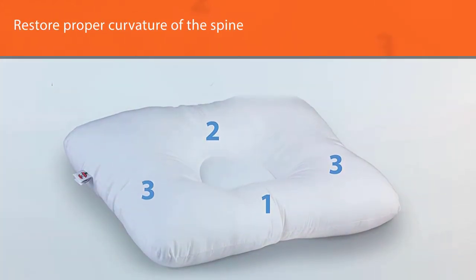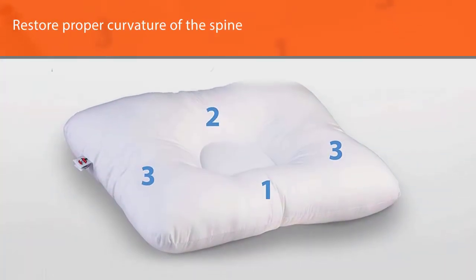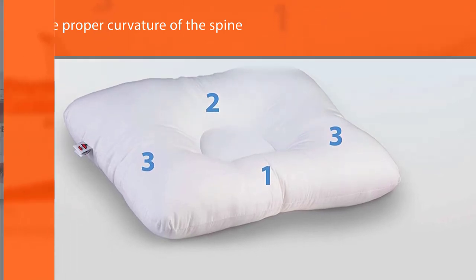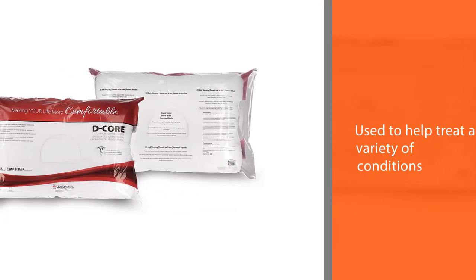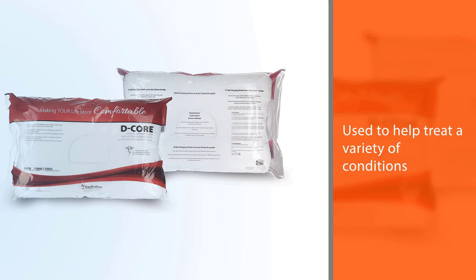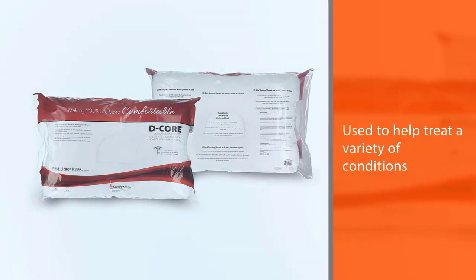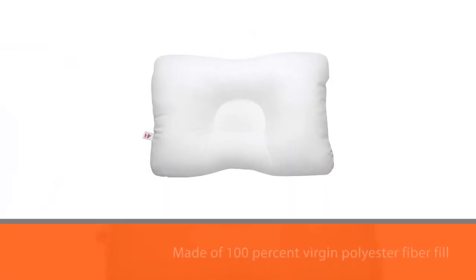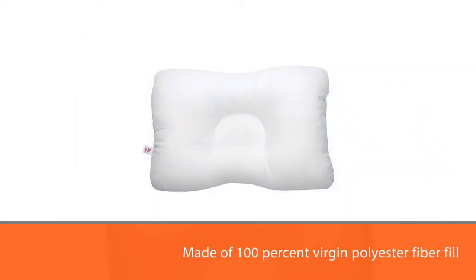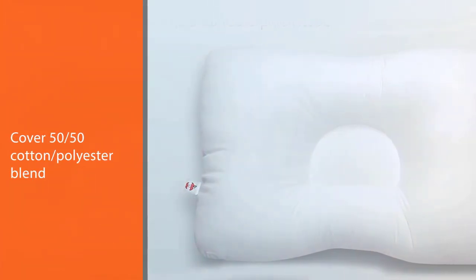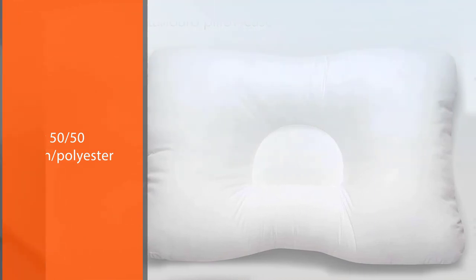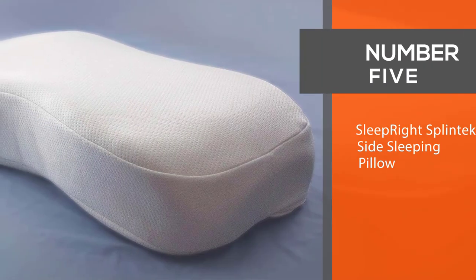It helps restore proper curvature of the spine and is commonly used to help treat a variety of conditions affecting the neck and shoulders. Non-allergenic, 100% virgin polyester fiberfill. Covers are 50/50 cotton-polyester blend. The D-Core pillow fits in a standard pillowcase and is made in the USA.